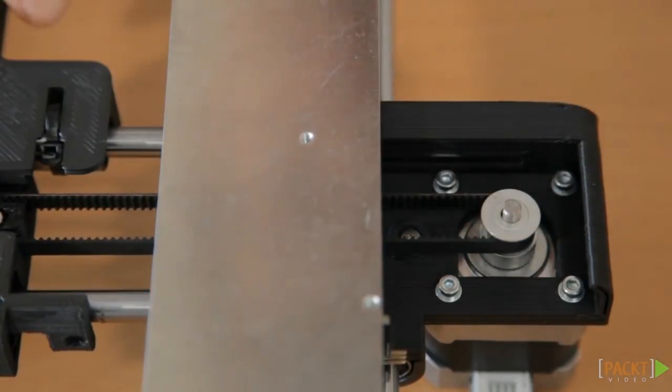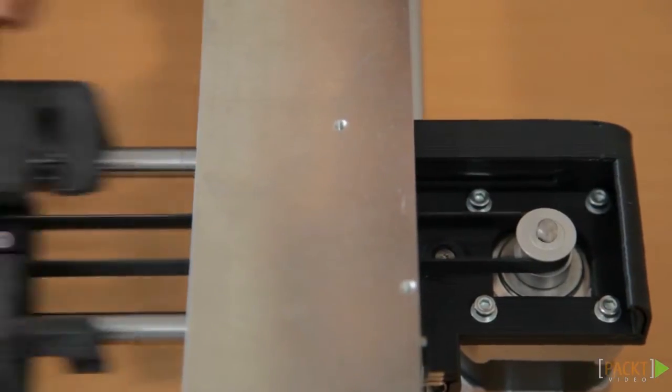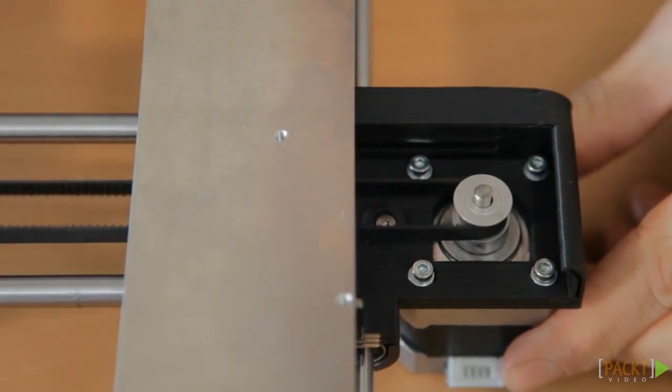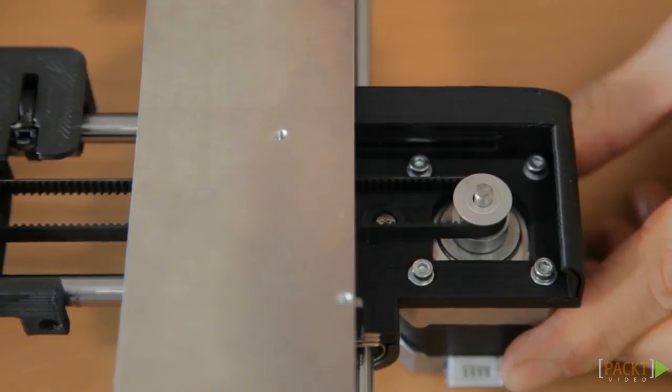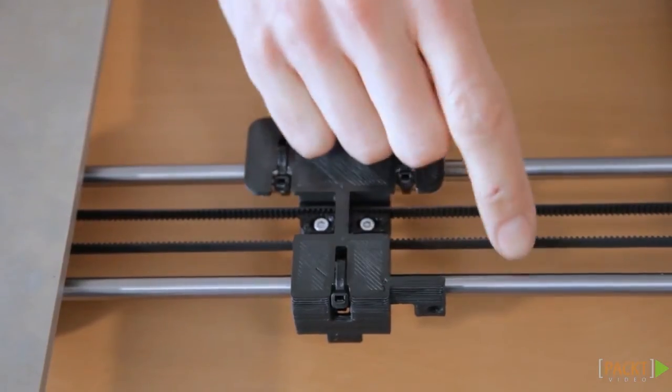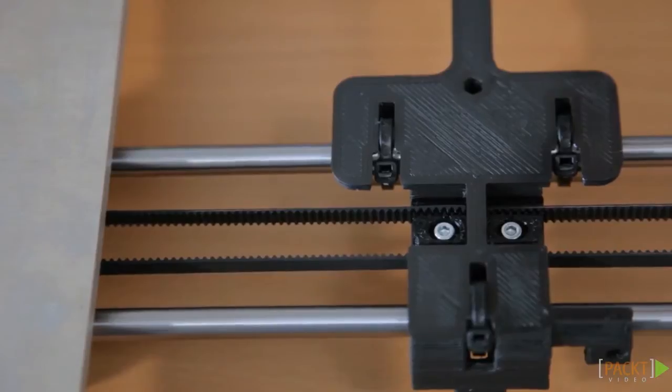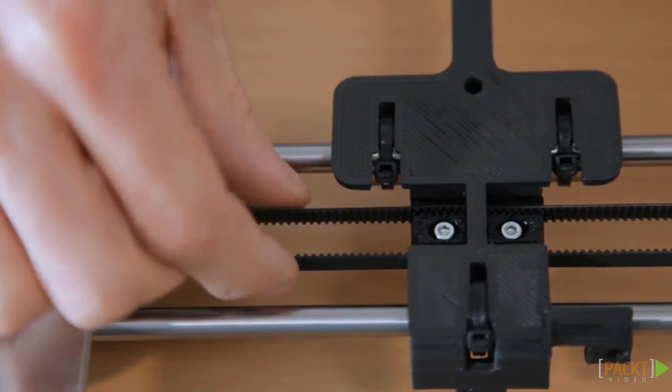Check the tension of the belt. If the belt is moving up and down while moving the X-carriage, it is too loose. If the belt makes it sound like a guitar string, it's too tight. Like this, it's just right.